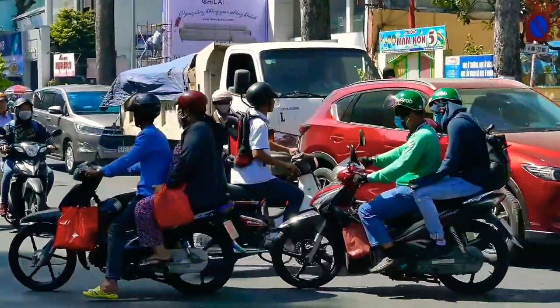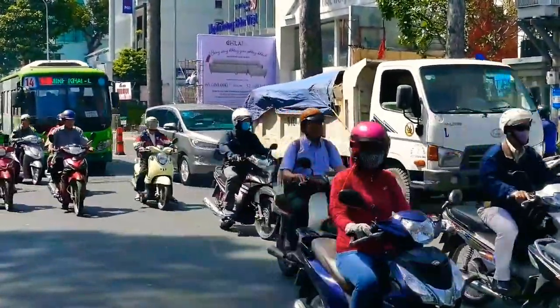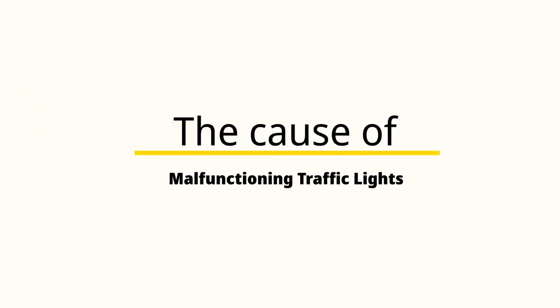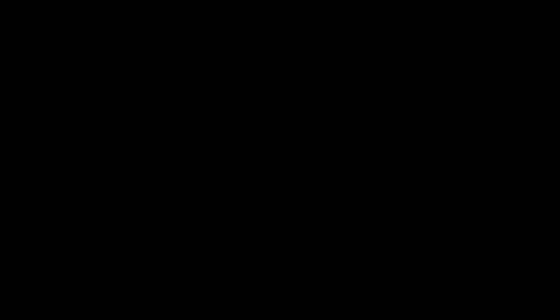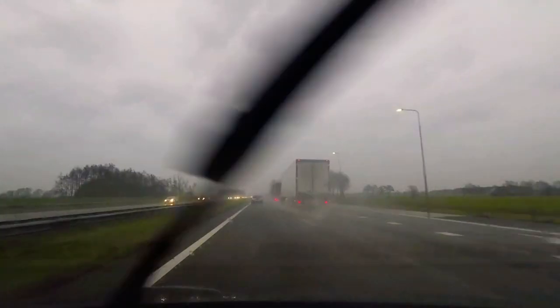Have you ever wondered why we have malfunctioning traffic lights that cause monstrous traffic jams? When it comes to traffic signals, a malfunctioning one can wreak havoc on normal intersection flow. The malfunction in traffic lights is caused by either power failure or busted bulbs.